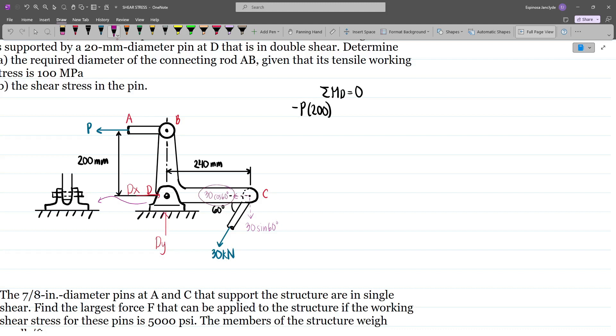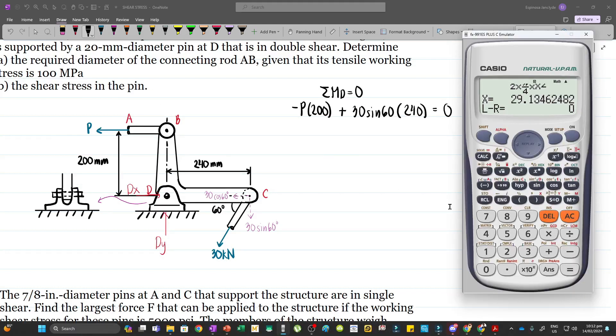However, the horizontal component won't have a moment arm because the line of action hits point D, so we'll just consider the vertical component. That will be plus 30 sin 60 multiplied by the moment arm of 240 mm, equal to zero. Solving for P, we have 30 sin 60 times 240 divided by 200, which equals 31.177 kN.